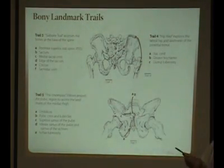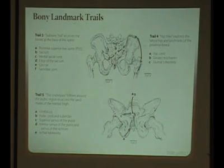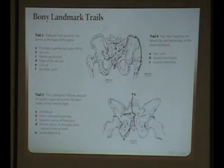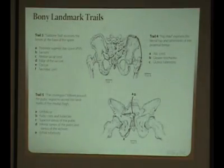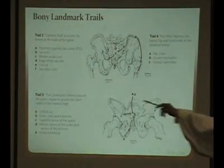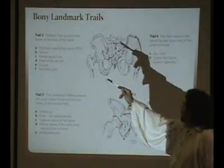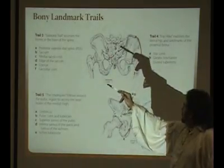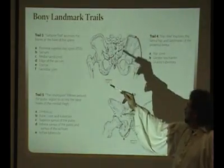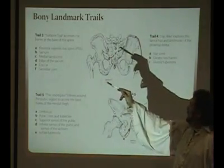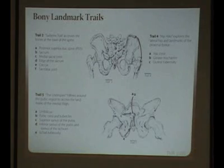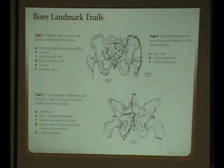Whether you may or may not be able to actually palpate it, you're going to know where it is if you can find the top part of the sacrum up here and find the PSIS — then you know where the foramina are going to be; they'll be right along that line in there.